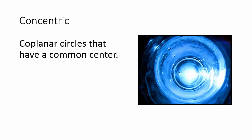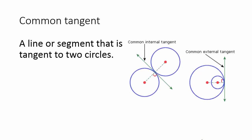Concentric: coplanar circles that have a common center. Looking at this picture, you can see there are many circles in this ripple, but the center of all of the circles is the same. Common tangent: a line or segment that is tangent to two circles. We have an internal tangent that is between two circles, and an external tangent that is on the outside of two circles.